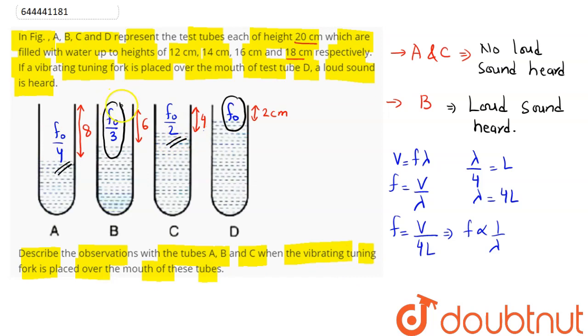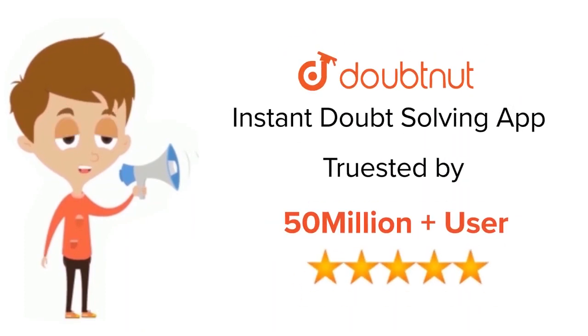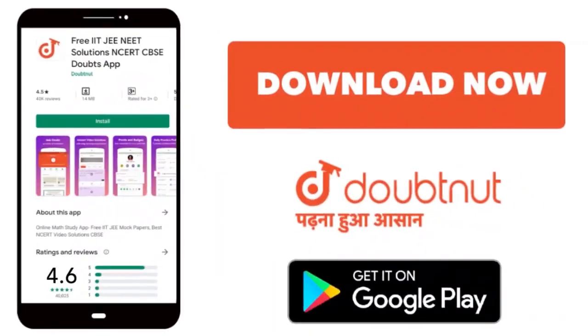Only f naught by three will be in resonance with the tuning fork as that of D. Hence we can say B will resonate with the tuning fork. Hence in case of B, loud sound is heard, whereas with A and C no loud sound is heard. Hence this is our answer. For class 6-12, IIT-JEE and NEET level, trusted by more than 5 crore students, download Doubtnut app today.